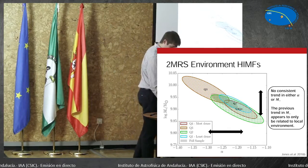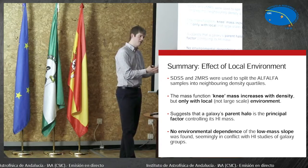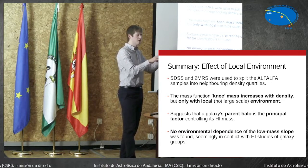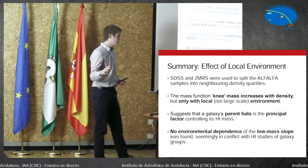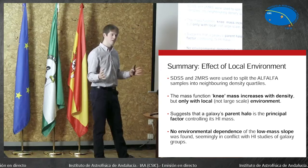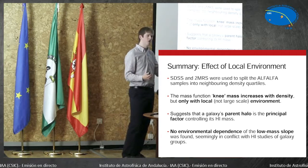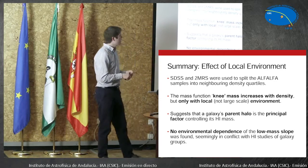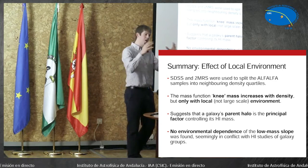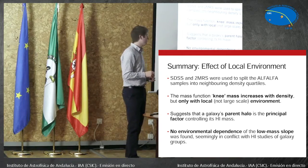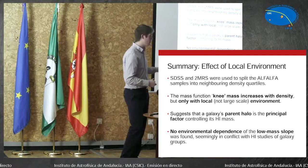So what we think is happening is that the SDSS environment definition is looking at a fairly local environment — the typical length scale probed is one or two megaparsecs. Whereas the typical length scale when you use the 2MASS Redshift Survey is about 10 megaparsecs. So it seems that the knee mass is dependent on environment, but it only depends on the galaxy's local environment. The principal thing determining the H1 properties of the galaxy is its parent halo — the region that's within about one megaparsec of it. And so far we've found no dependence in either definition of environment on the low-mass slope.